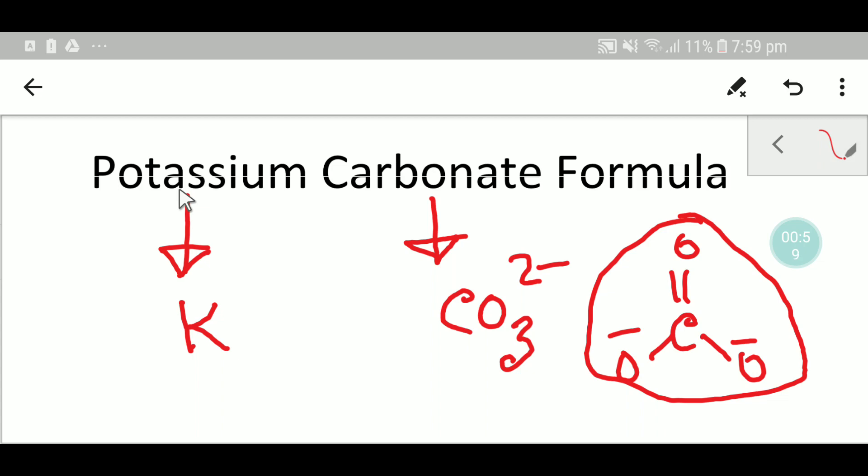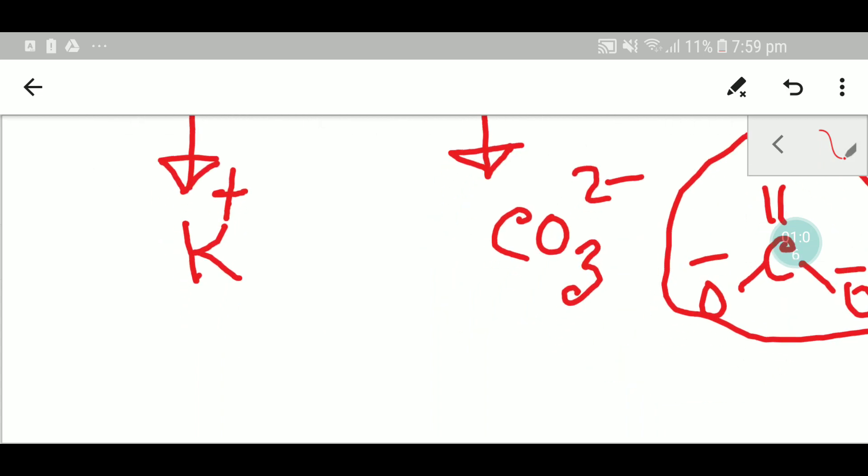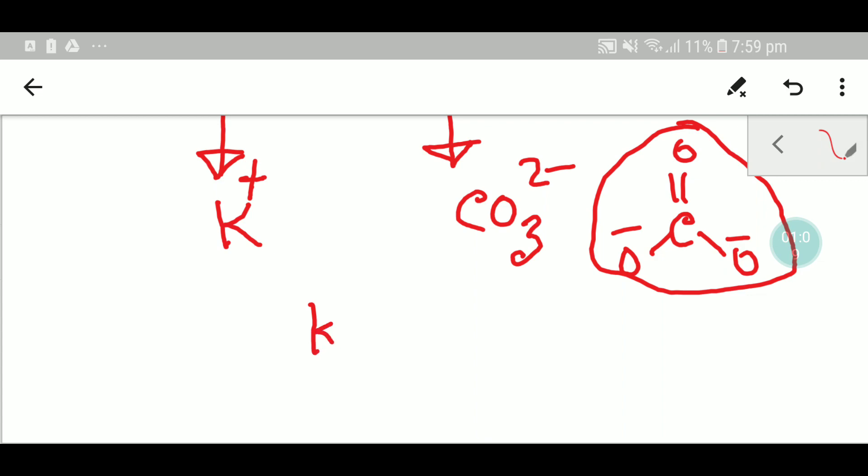So however, the charge of potassium is plus one. Now you need to write these two types of ions side by side. Now you have to balance the number of charges.